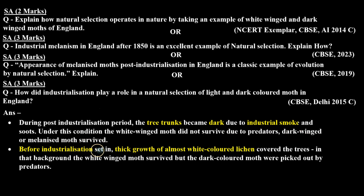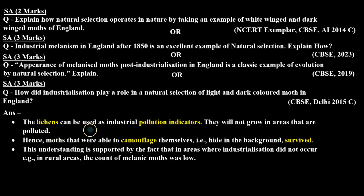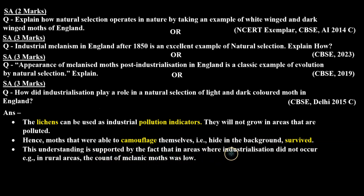Before industrialization, thick growth of almost white-colored lichen covered the trees. Against that background, the white winged moth survived but the dark colored moth were picked out by predators. The lichens can be used as industrial pollution indicators — they will not grow in areas that are polluted. Hence, moths that were able to camouflage themselves, that is hide in the background, survived.